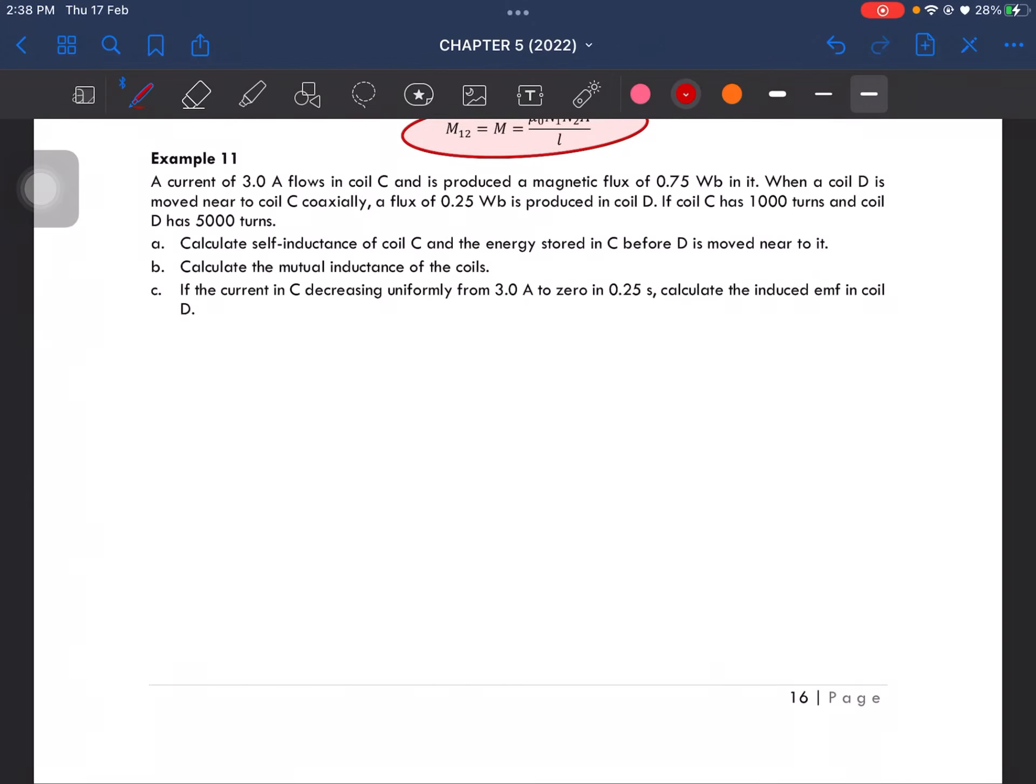Okay, last example. Example 11. A current of 3 ampere flows in coil C and produces a magnetic flux of 0.75 Weber in it. When coil D is moved near to coil C coaxially, a flux of 0.25 Weber is produced in coil D. If coil C has 1,000 turns and coil D has 5,000 turns,